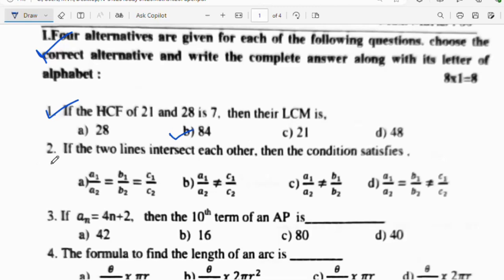Second question: If the two lines intersect each other, then the condition satisfies. The condition is A1/A2 not equal to B1/B2. Option C is the right answer.